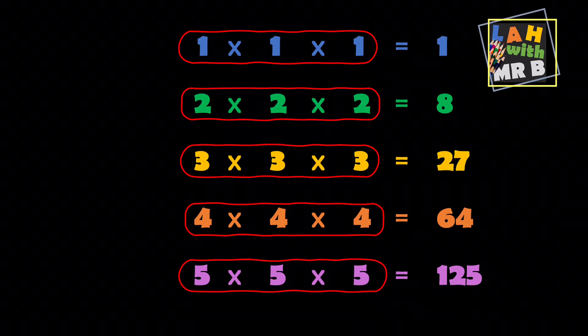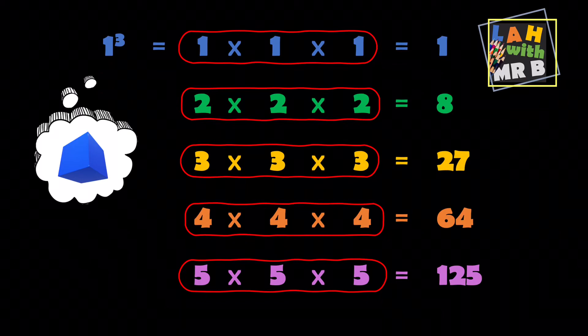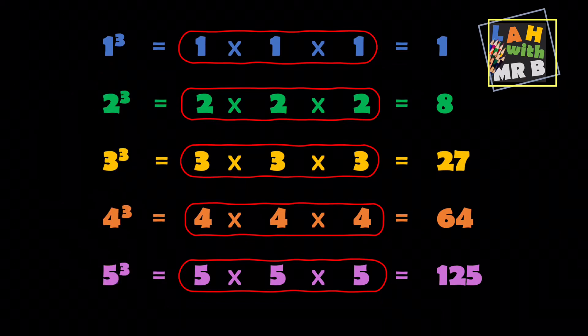Well, when we're cubing it, instead of writing a little two, we're going to write a little three. So one times one times one is one cubed. And remember, the little three means we're thinking about taking that number and turning it into a cube where all the sides are made up of that number.